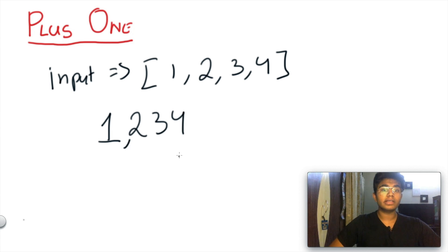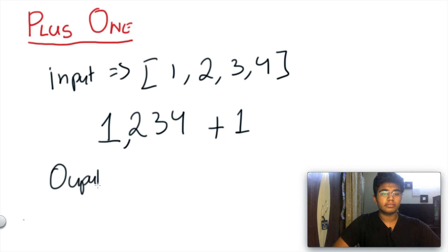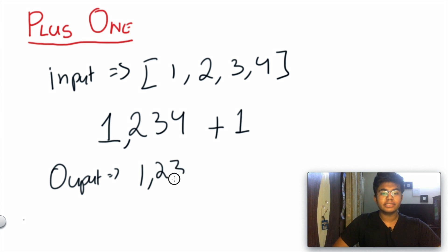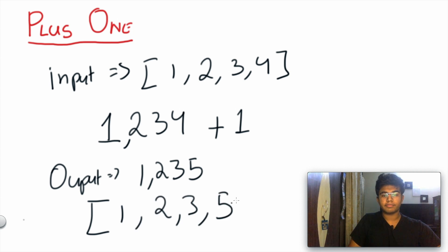What you're supposed to do is add one to this number, so 1234 plus one is 1235. Our output is going to represent the value of 1235, written as the list [1, 2, 3, 5].